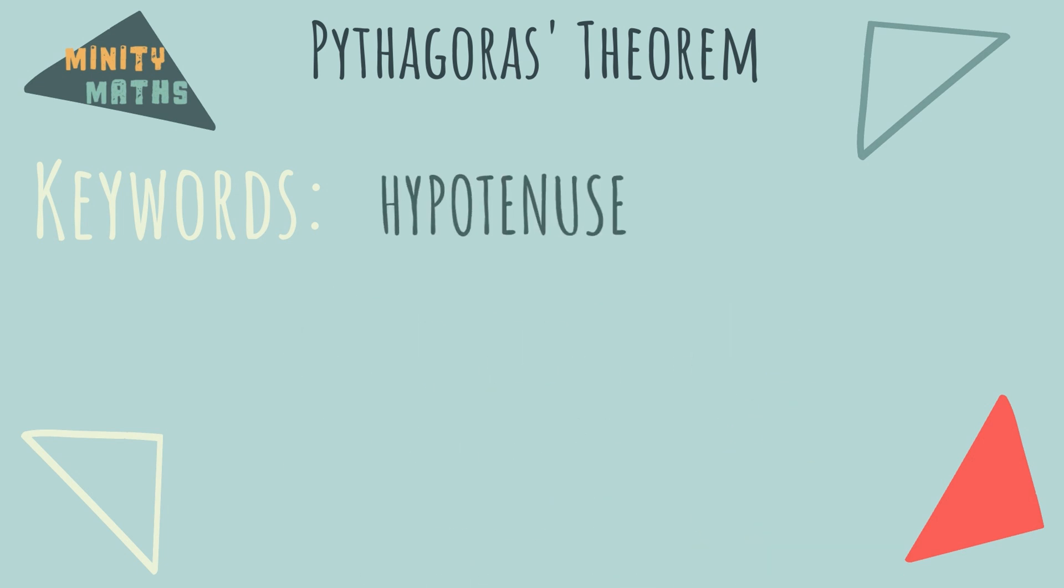Secondly, we need to know what a hypotenuse is. A hypotenuse is the longest side of a right-angled triangle. It will always be the side opposite the right angle.